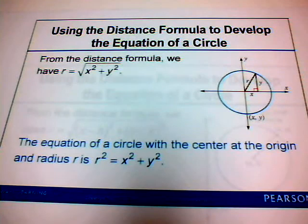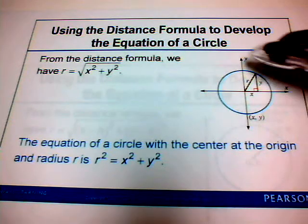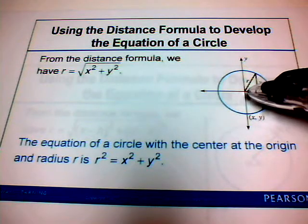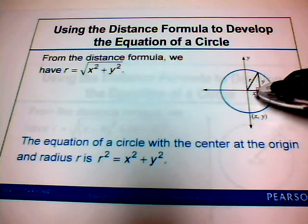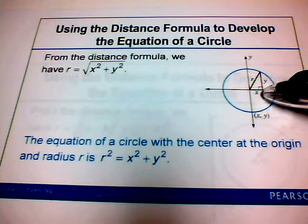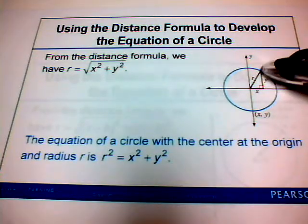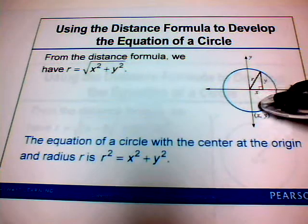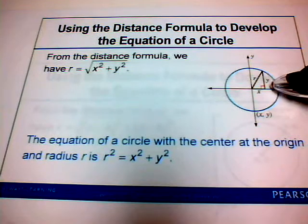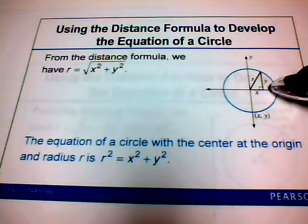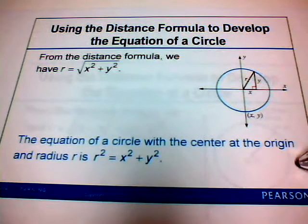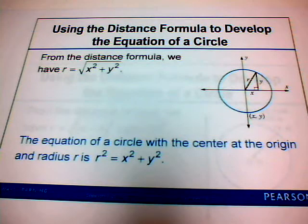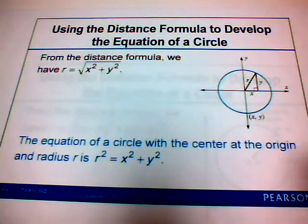Next is using the distance formula to develop the equation of a circle. For a circle centered at the origin, the radius r goes from the origin to a point (x, y) on the circle. Using the Pythagorean Theorem, r squared equals x squared plus y squared. So the equation of a circle with center at the origin and radius r is x squared plus y squared equals r squared.